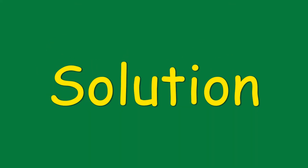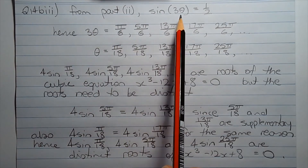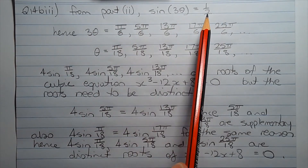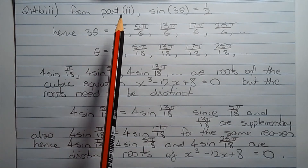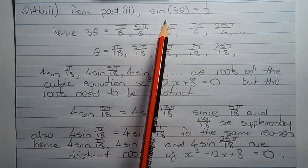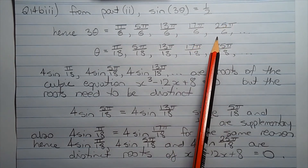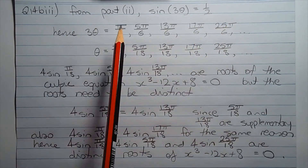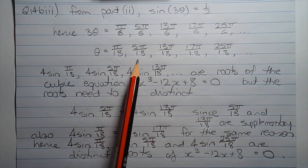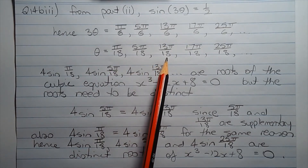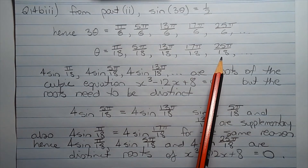Part 3. Prove that sin squared pi over 18 plus sin squared 5 pi over 18 plus sin squared 25 pi over 18 equals 3 over 2. From part 2, sin 3 theta equals one half. Taking the inverse sine of both sides, we get 3 theta equals pi over 6, 5 pi over 6, 13 pi over 6, 17 pi over 6, 25 pi over 6, and so on. Dividing both sides by 3, theta equals pi over 18, 5 pi over 18, 13 pi over 18, 17 pi over 18, 25 pi over 18, and so on.